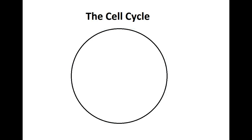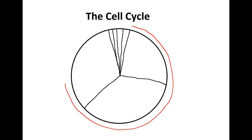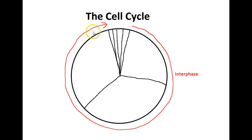What we're going to be looking at here is the cell cycle, where a cell spends most of its time. What I'm drawing here is a rudimentary pie chart. I've broken it up into several sections, and the longest one is called Interphase — this is where a cell spends most of its time, living out its life essentially. Interphase is broken up into three separate sections: G1, S, and G2.